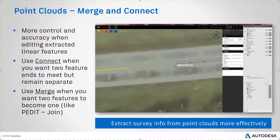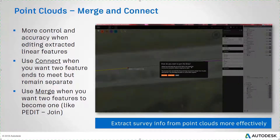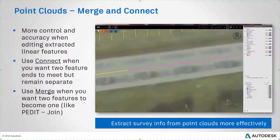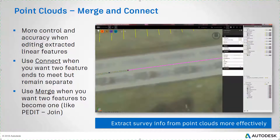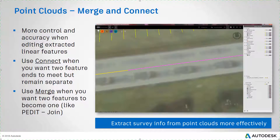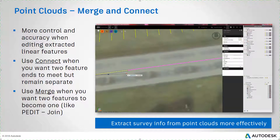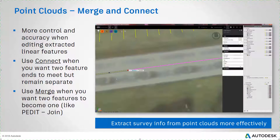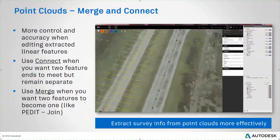In the latest release of InfraWorks, you are now given two options when you match the end points of two extracted linear features. You can choose Connect to make the ends meet but keep the features separate, or you can choose Merge to convert the two features into one, similar to the pEdit command in AutoCAD with the Join option. With this option, the second feature will take on the properties of the first and become part of it. These two new capabilities allow you to extract survey info from point cloud data more effectively.